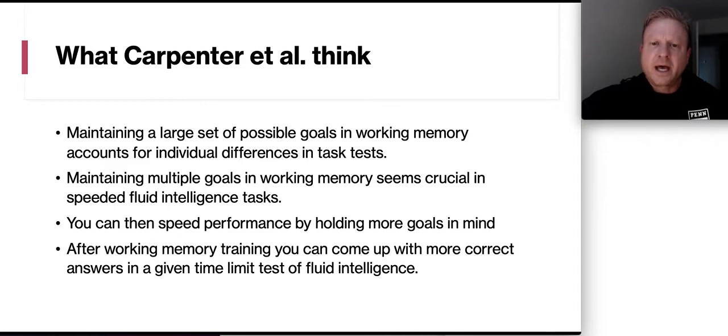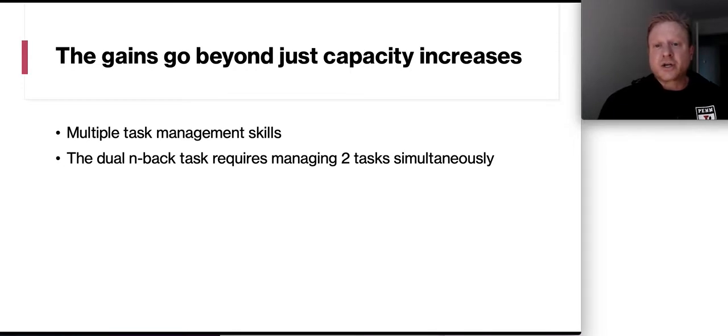Now here's what Carpenter et al. think. They think that maintaining a large set of possible goals in working memory accounts for individual differences in task-tests. They also believe that maintaining multiple goals in working memory does seem crucial to speeded fluid intelligence tasks. So you could take those exams faster. You can then speed performance by holding more goals in mind. And then after working memory training, you can come up with more correct answers in a given time limit if you're taking a fluid intelligence test that has a time limit on it. And they did put a time limit of 10 minutes on the fluid intelligence test here. Now the gains are actually going beyond just capacity increases. You're learning how to do multiple task management skills. And then the dual end-back task is requiring you to manage two tasks simultaneously.